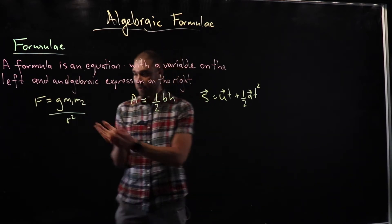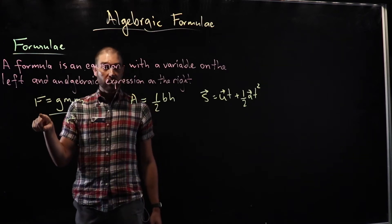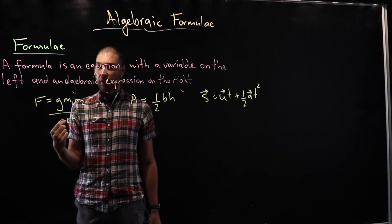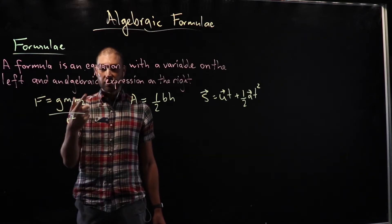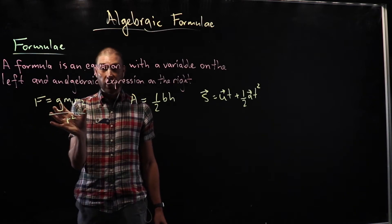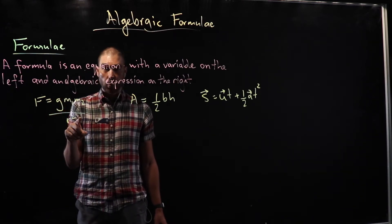I've got some examples here. This one is universal gravitation. The force experienced by an object due to gravity equals the gravitational constant g, times the mass of the first object, times the mass of the second object, divided by the distance between those objects squared.